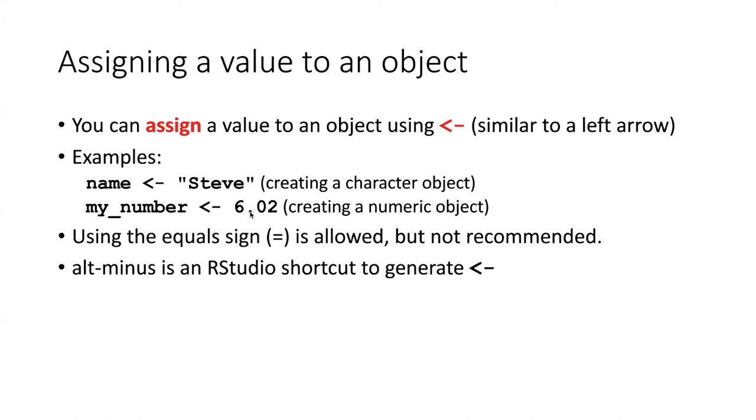Or if I want to assign a number to a named object, I can use the same character, and this time I don't put it in quotation marks. So the way that RStudio knows the type of object that this is, is by the type of object that you put into it. So if you assign a string, then it knows that 'name' is a character object. If you put a number into it, if you assign a number into it, then it knows that the object called 'my_number' is a numeric object.